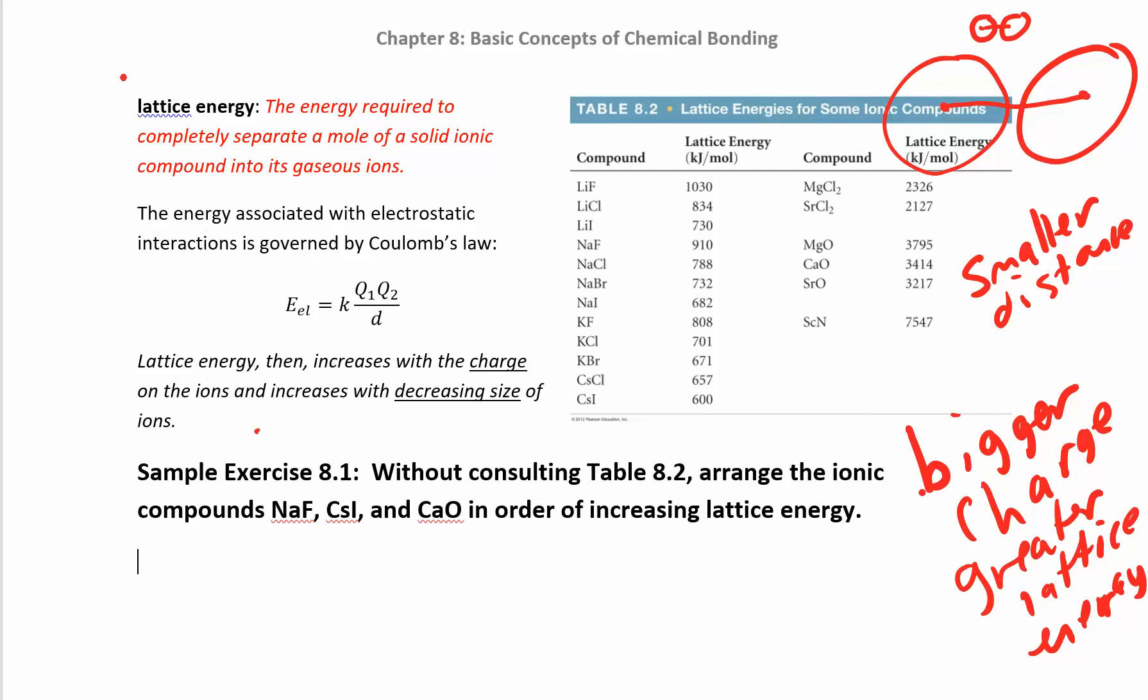The lattice energy is the energy required to completely separate one mole of a solid ionic compound into its gaseous ions. What that really means is it's talking about how stable the compound is. Lattice energy has to do with stability. The higher the energy, the more stable it is. If you look over here in this table, like lithium fluoride, those are two really tiny atoms and they have a high lattice energy. You have a plus one charge and a minus one charge. If you go over to something like calcium oxide, it has a way bigger lattice energy because calcium has a plus two charge and the oxide ion has a minus two charge.